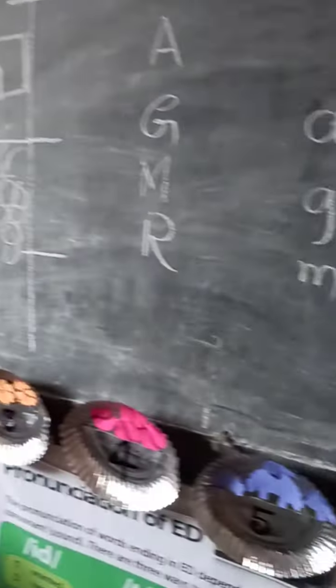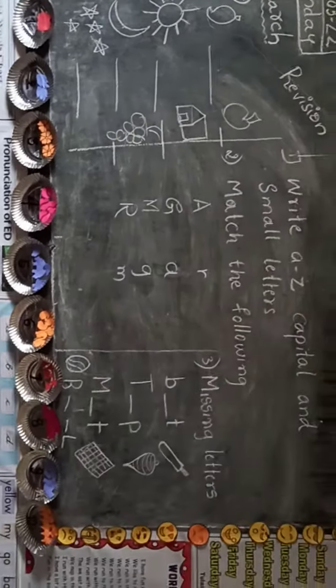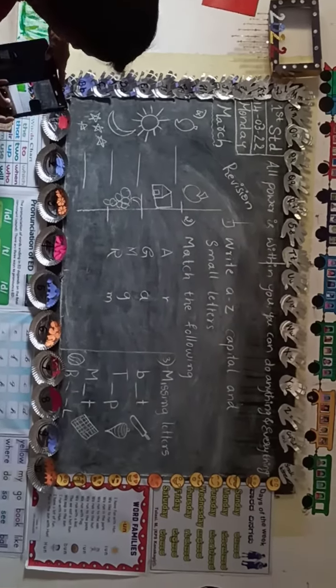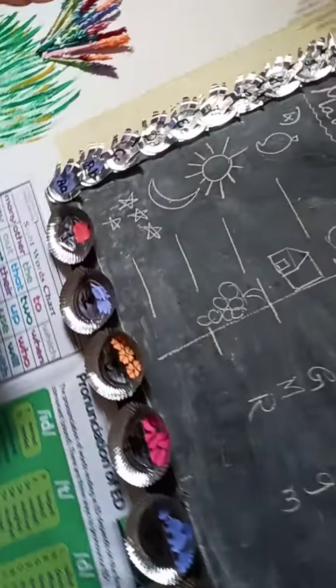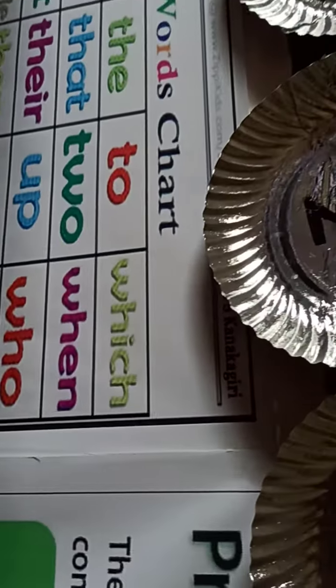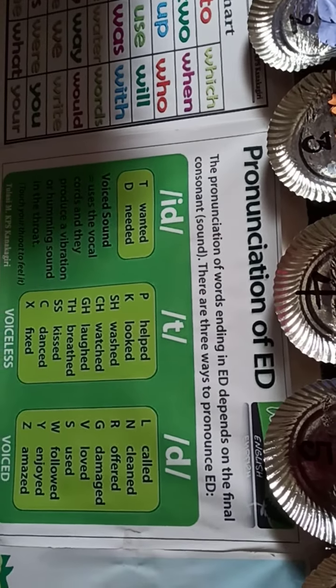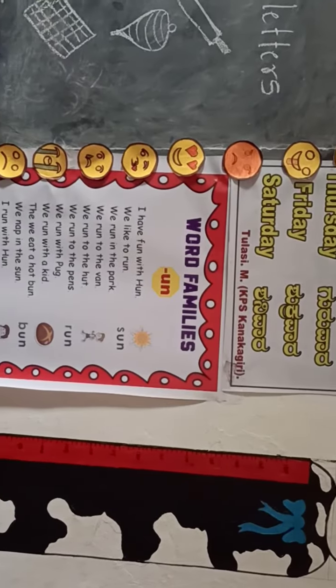And this is my classroom decoration — blackboard decoration. We have organized the blackboard like this. There are some flexors to learn the words — the sight words. And these are the pronunciation words chart, and cursive letters flex. And these are the sight words, days of the week, and word families.